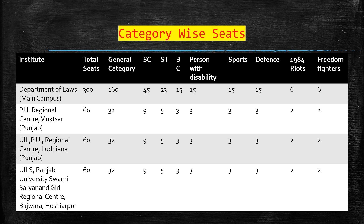For category-wise seats in the Department of Laws: General category has 160 seats, SC (Schedule Caste) category has 45 seats, ST is around 23 seats, Backward category 15, Person with Disability 15 seats, Sports 15, Defense 15, 1984 Rights 6 seats, Freedom Fighters 6 seats — you can see which category you belong to and check your rank accordingly.